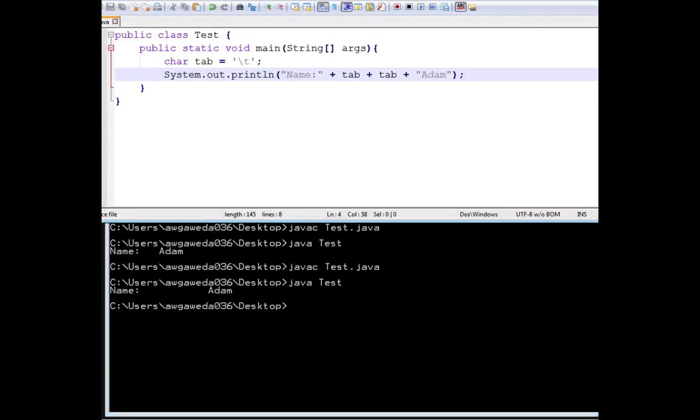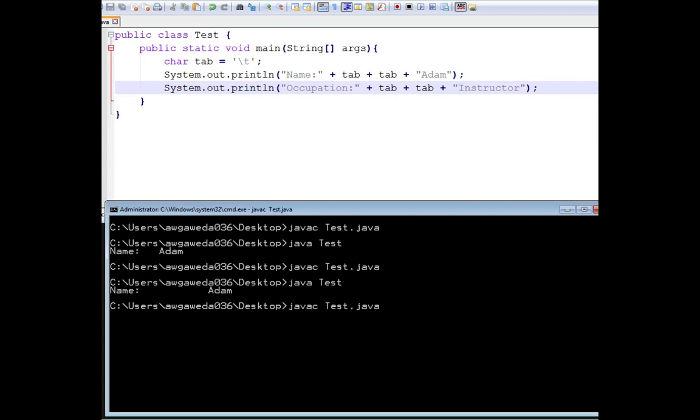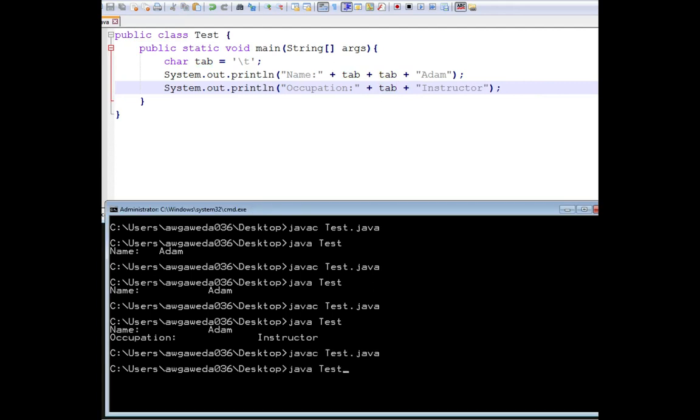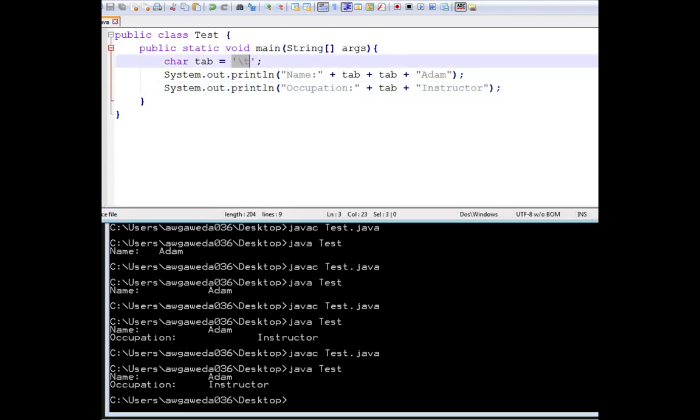Well, if we take a look at another system.out.println line, let's say we made a bigger word. Instead of name, we said occupation, instructor, javac, javatest. Now, things are slightly off, but let's get rid of that second tab over here. And what you're going to see is that tabbing over, now I'm starting to allow myself to have proper alignment with my text, which is really nice. It gives me a little bit more fluidity and just better readability with my code. So we can take care of things like this.